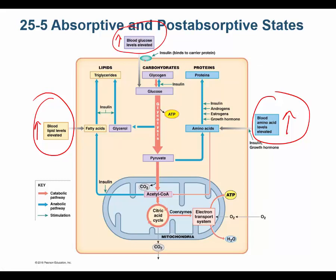When I have high glucose, insulin is secreted. Insulin binds its receptor, opens glucose channels, and glucose enters the cell. If the cell needs ATP, this glucose is sent through glycolysis, the Krebs cycle, and the electron transport chain, making a ton of ATP. ATP itself and citrate from the citric acid cycle feed back and turn off these pathways.